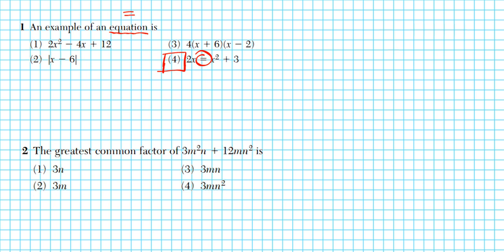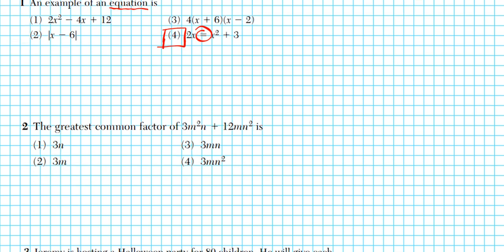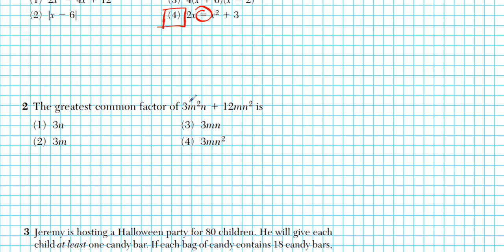Let's shift our attention to problem 2. We have to find the greatest common factor from these two terms. The greatest common factor is basically the biggest factor we can extract from these two terms. The first thing we are going to do to make the process easy is to decompose these two into their prime factors.